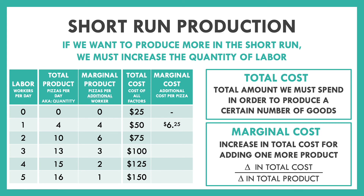Going from one worker to two workers: our change in total cost is again $25 (from $50 up to $75), but this time we get 6 pizzas from that second worker. So $25 divided by 6 gives us $4.17 per pizza. Next, from two to three workers: we pay $25 more and get 3 pizzas — $25 divided by 3 is $8.33. Then from three to four workers: we pay $25 more and get 2 pizzas — $25 divided by 2 is $12.50.